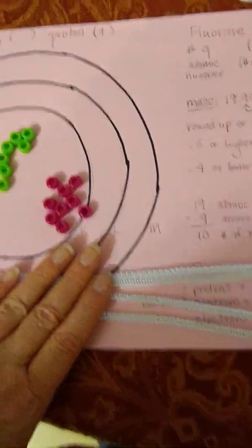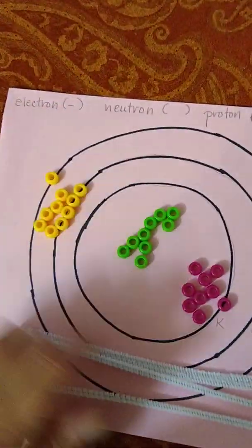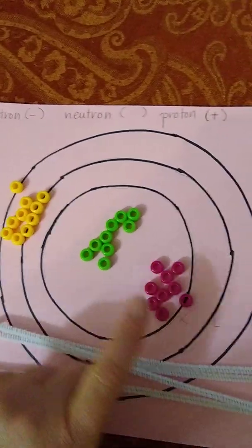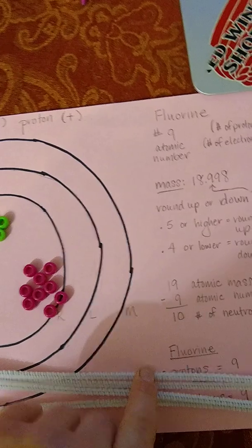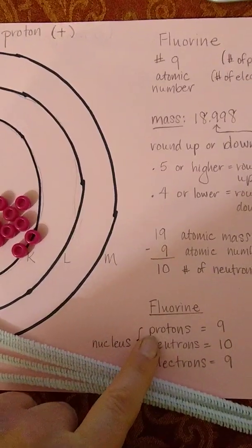I have chenille pipe cleaners and three different colored beads in the proper number to coordinate with the proton, neutron, and electron configuration.